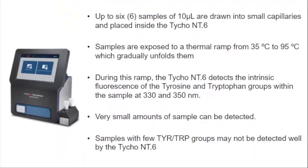So what is TYCO and how does it work? The TYCO can use up to six samples of 10 microliters. You draw them into small capillaries and place them inside the device. Those samples are exposed to a thermal ramp from 35 degrees Celsius to 95 degrees Celsius, which slowly unfolds them. While this ramp is happening, the TYCO detects the intrinsic fluorescence of the tyrosine and tryptophan groups within those samples at 330 and 350 nanometers. It's worth noting that this relationship is dependent upon the number of tyrosine and tryptophan groups in the protein, so samples that do not have many of these groups may not be detected well by the TYCO.